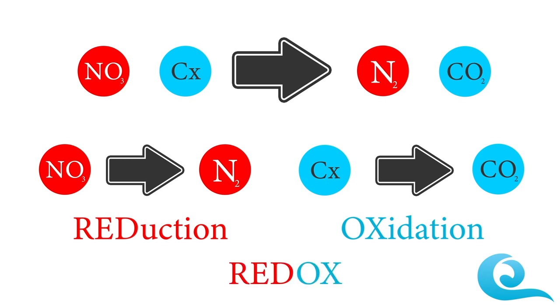This forms what we call a redox reaction. We have the red from reduction and the ox from oxidation, hence redox. Now, let us learn how nitrate removers work. There are three main types of nitrate removers.